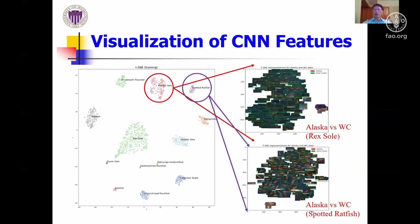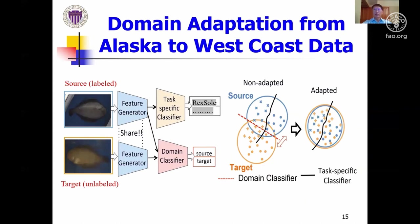The embedding features of the West Coast dataset based on the AI-CNN model are also illustrated in the T-SNE plot, where rockfish and spotted redfish clusters are shown. They have quite different embedding features from those of Alaska fish of the same kind. To perform fish identification on the West Coast dataset without fine-tuning, it is essential to overcome the domain shift using an unsupervised domain adaptation technique, so that the trained classifier from Alaska can be adapted to the West Coast dataset once features from both domains are better aligned.